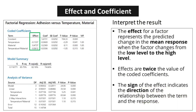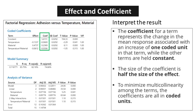The effect for a factor represents the predicted change in the mean response when the factor changes from the low level to the high level. Effects are twice the value of the coded coefficients, and the sign of the effect indicates the direction of the relationship between the term and the response. The coefficient for a term represents the change in the mean response associated with an increase of one coded unit in that term, while other terms are held constant. The coefficient is half the size of the effect.